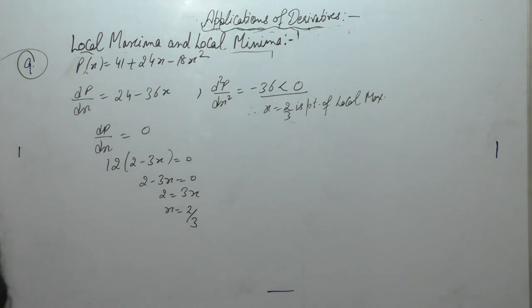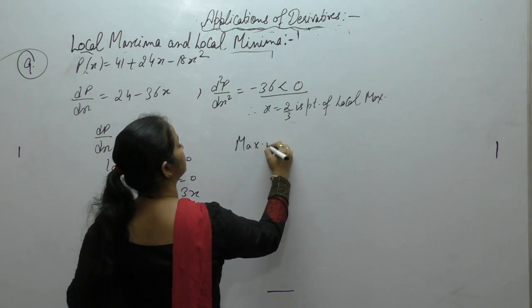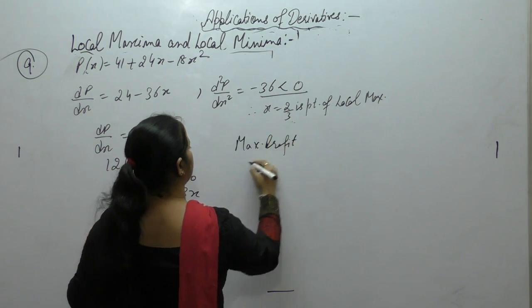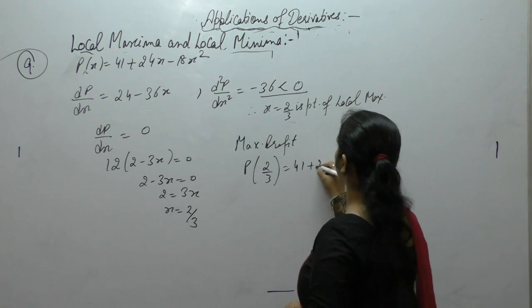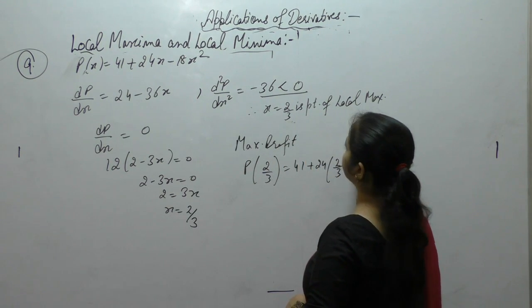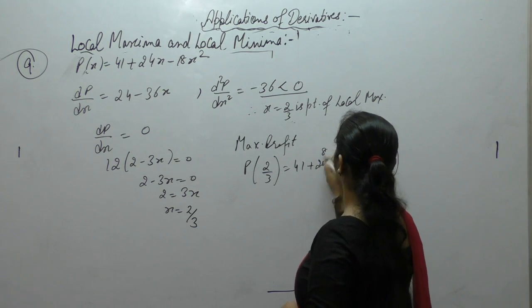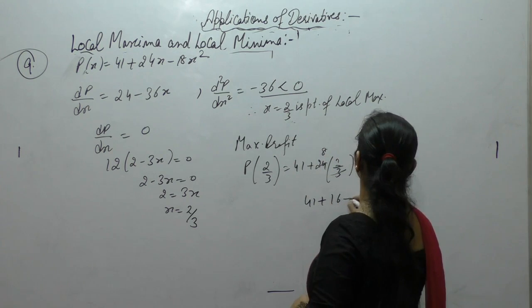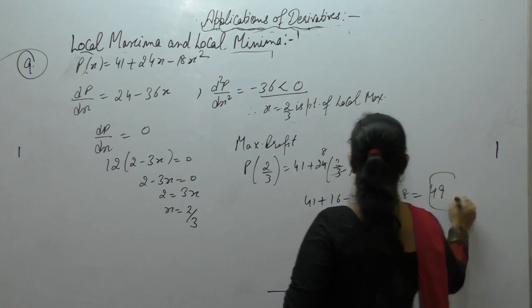Local maxima ka point hoga. So maximum profit: value of p at 2 by 3. 41, 24, 2 by 3, 2 square and 3 square. 41 plus 16 minus 8, so 49.